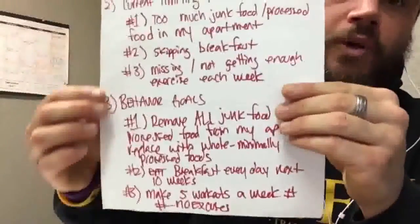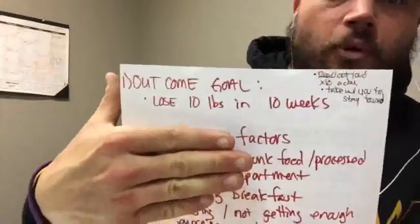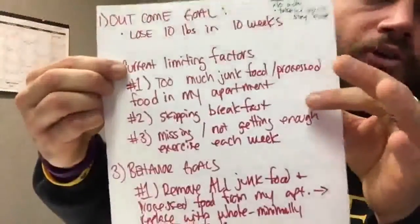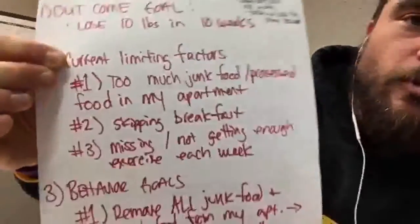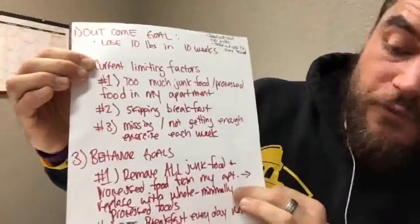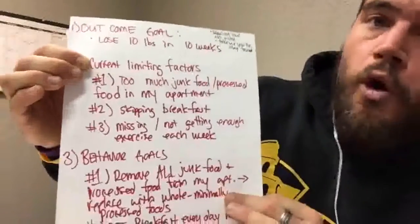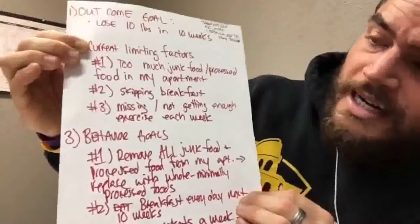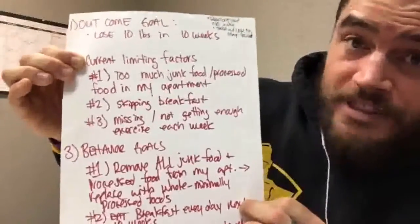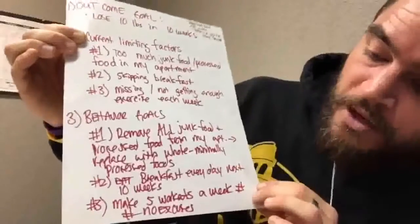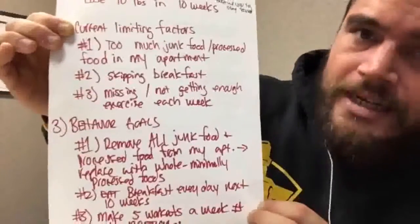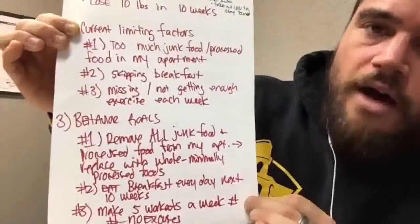Now the third and one of the most important parts — most people, when they set goals, only do step one and don't even talk about what's holding them back. Once we have this down, we know the three behaviors we're going to need to overcome our limiting factors. My first limiting factor was too much junk food in the house, so my first behavior — something I have complete control over — is to remove all junk food from the cabinets, fridge, and freezer, and replace it with whole, minimally processed foods. My second behavior is to eat breakfast every morning for the next 10 weeks — that's 70 breakfasts. And the third behavior is to complete five workouts a week, whether in the gym or at home, going for a walk or doing a bodyweight circuit — five hours of exercise a week.